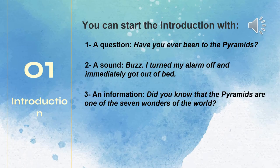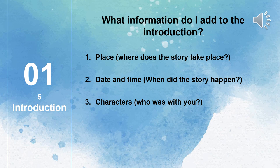Now we're going to move on to what to include when writing a personal narrative, especially the introduction. You can start with a question — for example, 'Have you ever been to the pyramids?' You can start with a sound — 'Buzz, I turned my alarm off and immediately got out of bed.' Or you can start with an interesting fact — 'Did you know that the pyramids are one of the Seven Wonders of the World?' These three techniques are very helpful and can elevate your writing. Also remember to include the place, the date and time, and your characters in the introduction.